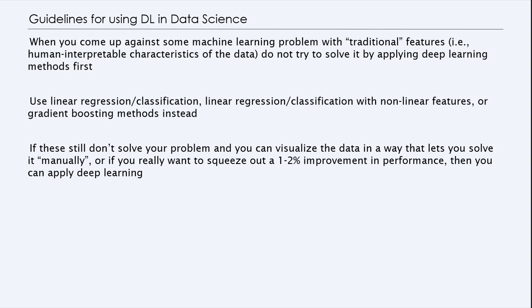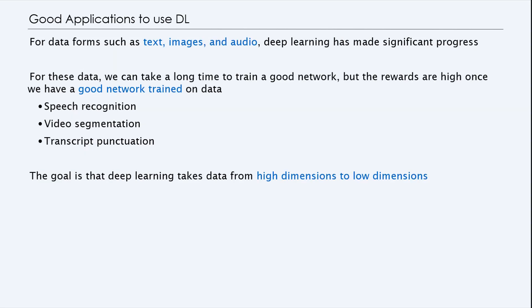If these things still don't solve your problem and you can visualize the data in a way that lets you solve it manually, or if you really want to squeeze out maybe one to 2% of improvements in performance, you can apply deep learning for the last mile, for example.